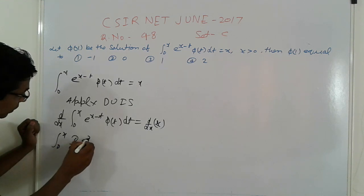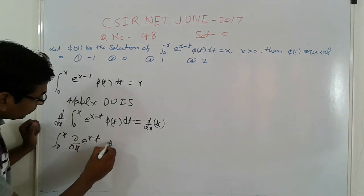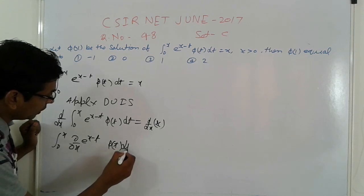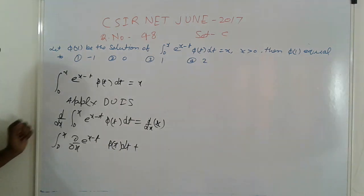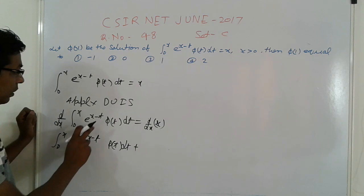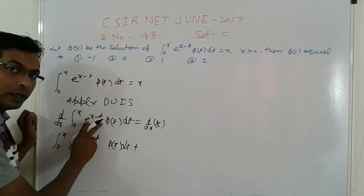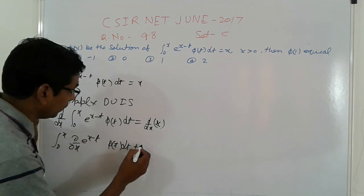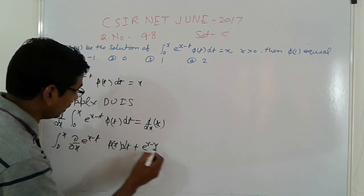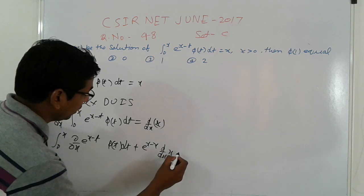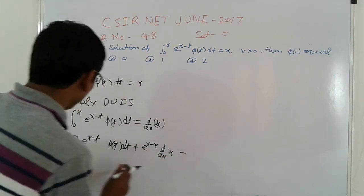∫₀ˣ ∂/∂x[e^(x-t) φ(t)] dt plus the value at the upper integral limit e^(x-x) φ(x).